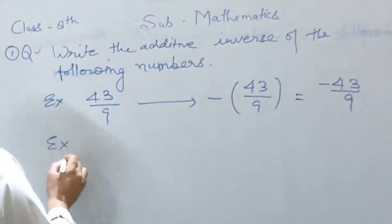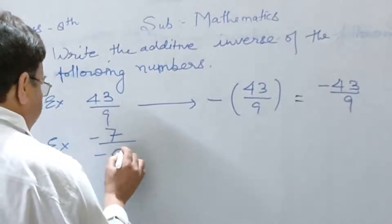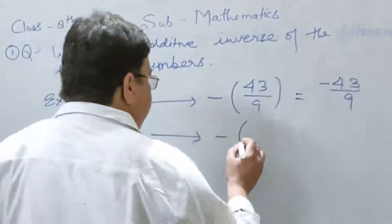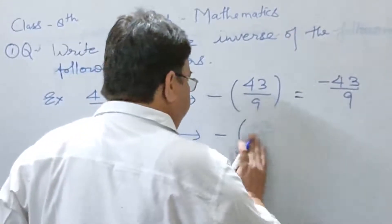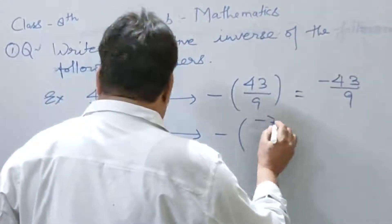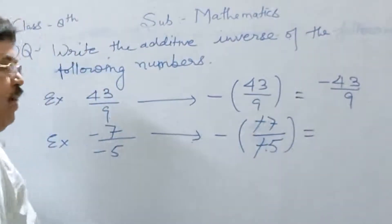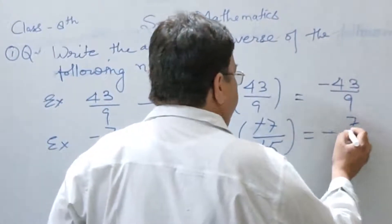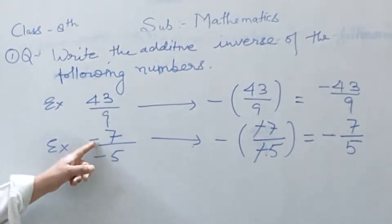And now, the second example. Minus 7 upon minus 5. Put the minus sign before the number. Minus 7 by minus 5. Minus cancelled by minus. Now, 7 by 5 is the additive inverse of minus 7 upon minus 5.